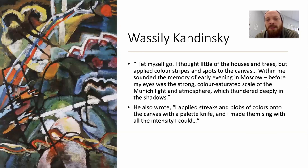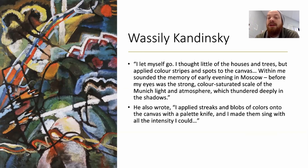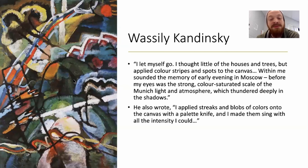He said, 'I let myself go. I thought little of the houses and trees, but applied color stripes and spots to the canvas.' Do you see some stripes on the canvas? Do you see some spots? Kandinsky also said, 'Within me sounded the memory of early evenings in Moscow. Before my eyes was the strong color-saturated scale of the Munich light and atmosphere which thundered deeply in the shadows.' He also wrote, 'I applied streaks and blobs of color onto the canvas with a palette knife.' Do you see streaks and blobs of color? He says, 'I made them sing with all the intensity I could.' What does he mean when he says he made it sing? Comment below if you know.